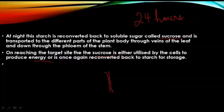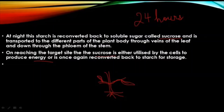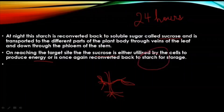Let me draw a rough diagram. This is a plant with roots underneath in the soil, a stem, a branch, and a leaf. The food prepared in the leaf goes through the phloem to different parts of the body. Suppose it reaches another branch where food is not required by the cells — at that site, the sucrose will once again get converted back to starch.